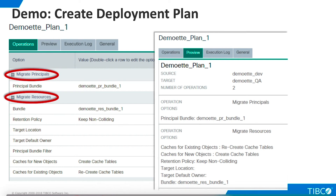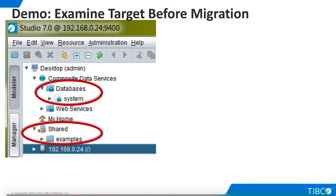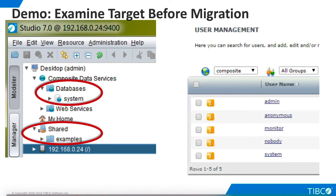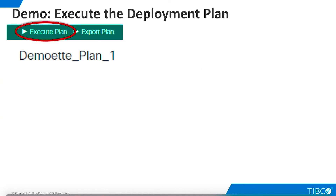On the Preview tab, we can see more details of the plan. The migration plan is ready for execution. Before we execute, let's take a look at the current state of the target TDV instance to understand the before and after states. We see that the target TDV instance currently contains only the virtual databases and developer artifacts that are installed by default with TDV. We also see that only the default users are currently defined.